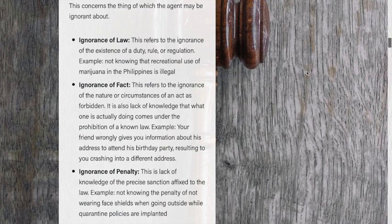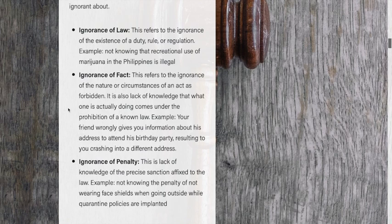So the law prohibiting recreational marijuana use in the Philippines exists, but the agent does not know it — that is ignorance of law. Ignorance of fact refers to ignorance of the nature or circumstances of an act as forbidden; it is lack of knowledge that what one is doing falls under the prohibition of a known law. For example, a friend wrongly gives you his address for a birthday party, resulting in you going to the wrong house.